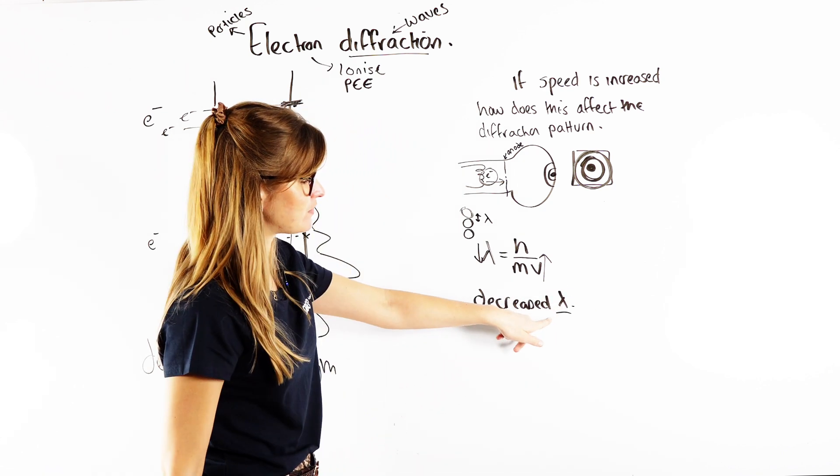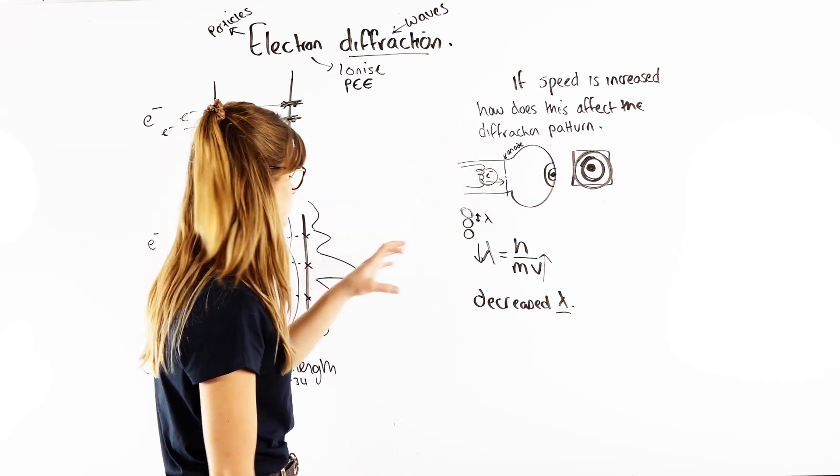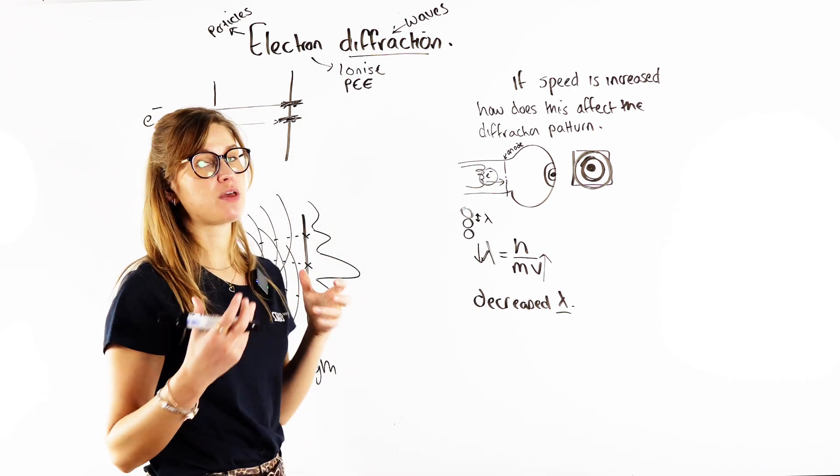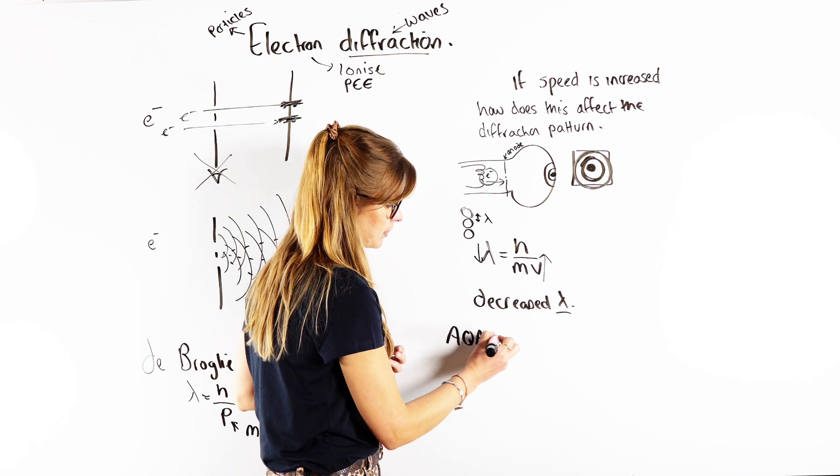Okay, so now I'm thinking, if I decrease the wavelength, how does that affect the diffraction pattern? So what I'm trying to relate now is what equation relates my diffraction patterns? And that's what I think about Young's double slit experiment. I know that for AQA, W equals, or the fringe spacing equals, the wavelength times the distance between the slits and the screen divided by the slit separation.